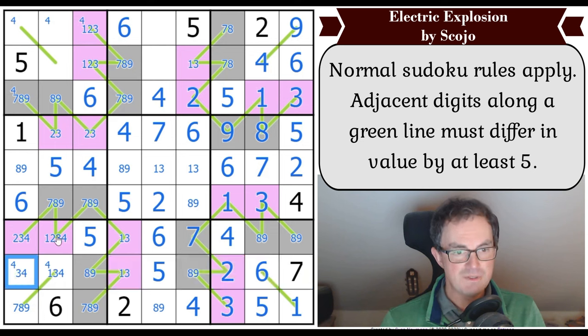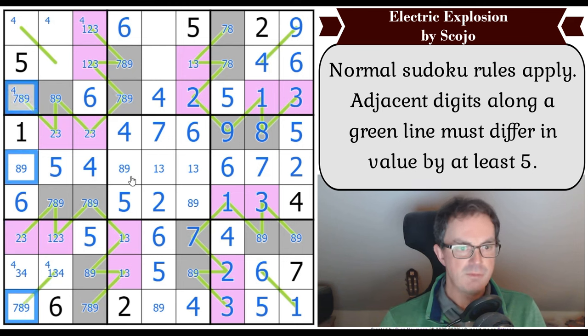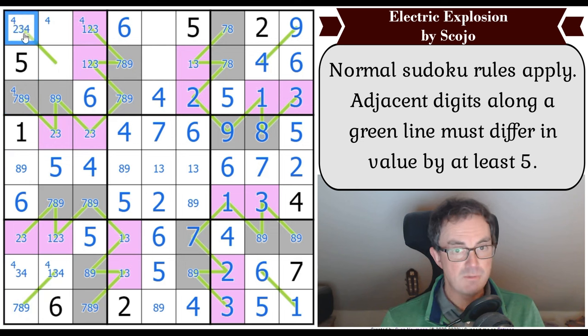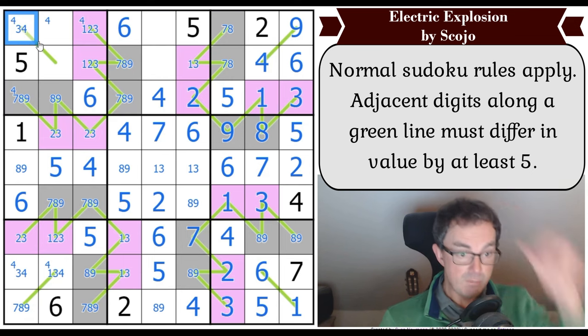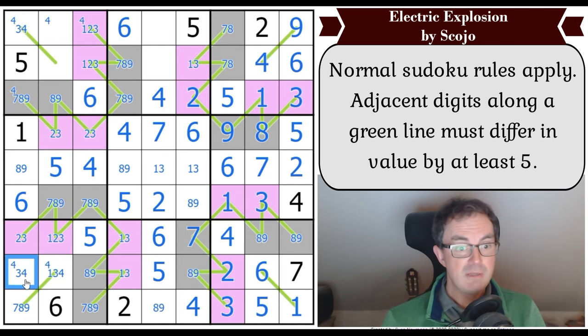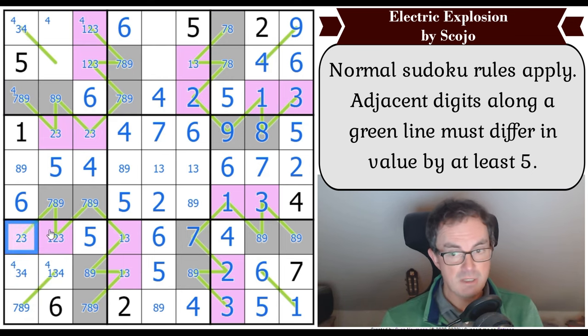That's not seven. There's an eight, nine pair in this row. That cell can't be a high digit anymore. Six, seven, eight, nine all seen. So it's a low digit, which means that's a high digit. That's a low digit. I thought that was going to immediately resolve a lot of things, but it didn't seem to want to. These can't include four because of this four.